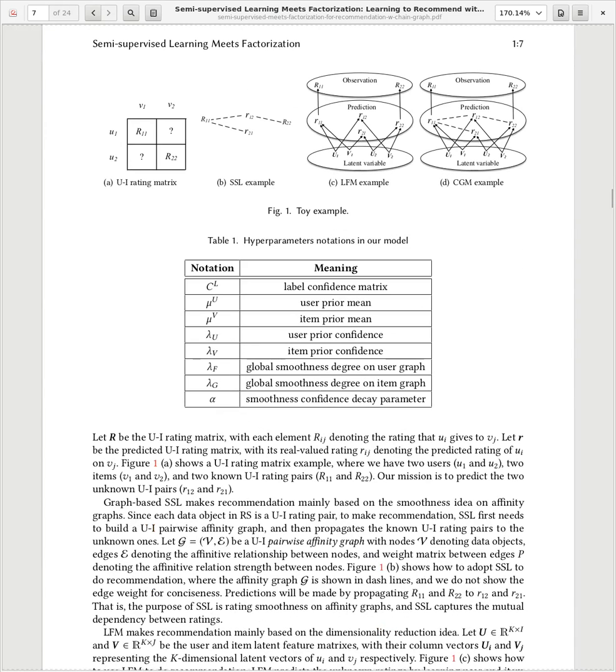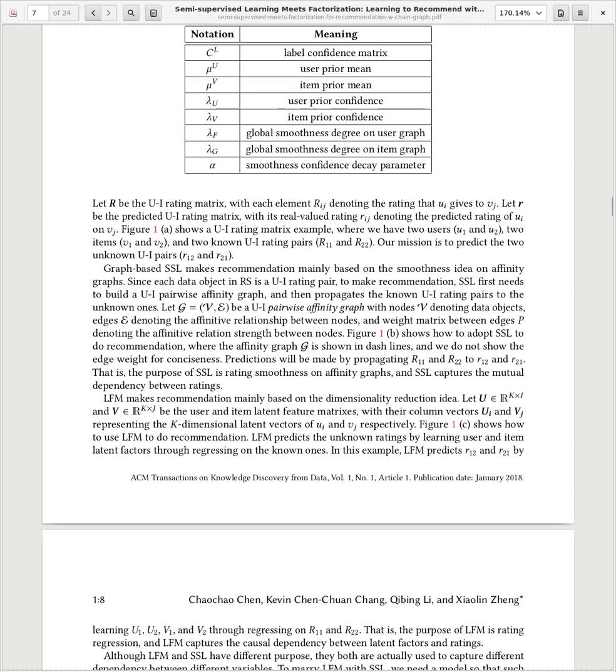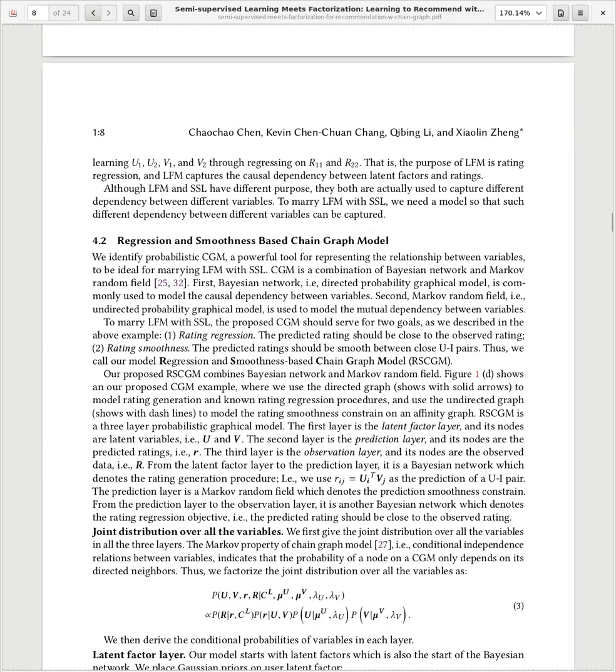So, once again, they have this origin data. They then do the decomposition and get this U and V matrices. They predict ratings and then they smoothen out the ratings based on similarity of the users and items separately. They call this joint smoothness instead of pairwise affinity. They do this based on the similarity. What they mean by this is that that's similarity on these graphs, the affinity graphs. Here we go. The graph-based SSL makes recommendation mainly based on the smoothness idea on affinity graph. The SSL first needs to build a pairwise affinity graph. So instead of doing that, they do just the user affinity and item affinity.